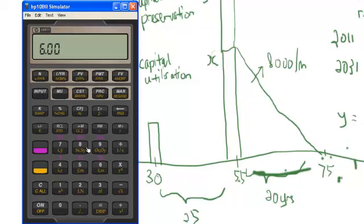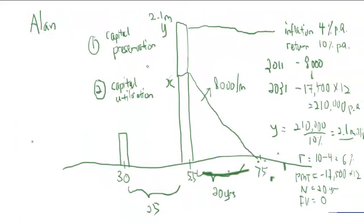Now we calculate the X amount using the financial calculator. Input 20 for N, rate of return is 6%, PMT is 210,000 (make sure it's negative), and future value is zero. You get the present value of 2.4 million.